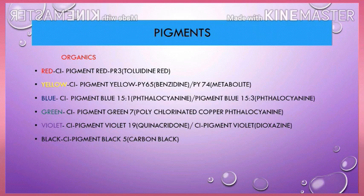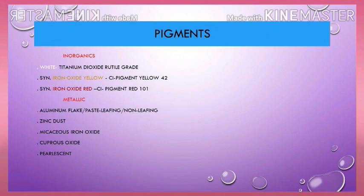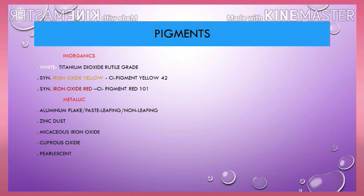There are of course a lot of organic pigments — I just listed some here as a guide. For inorganic pigments: White — Titanium Dioxide; Ochre red — Synthetic Iron Oxide Yellow, CI number Pigment Yellow 42; Synthetic Iron Oxide Red — Pigment Red 101. Also aluminium flake paste, leafing or non-leafing; zinc dust; micaceous iron oxide; chromium oxide; some pearlescent pigments. There are of course many more inorganic pigments — I just listed some items here.